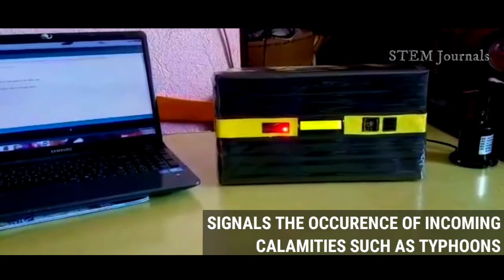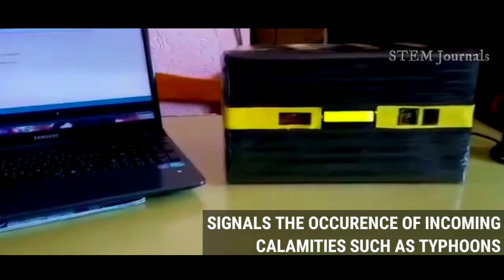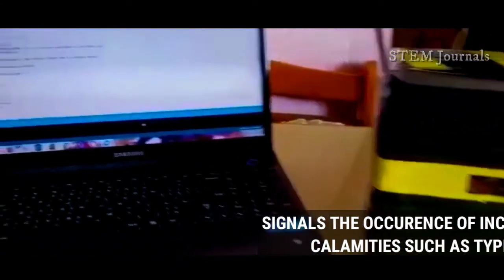Anemometer system signals the occurrence of incoming calamities such as typhoons, floods and storms.